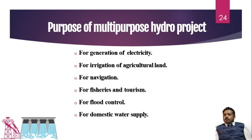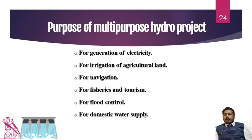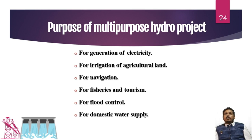Let's see what those purposes are. Generation of electricity is the basic need, but irrigation of agricultural land is another. As I explained in my last video, India has three different seasons and bulk water availability is only in the rainy season. If we want to keep agricultural growth increasing, we must provide water for agriculture in summer too. So we store water in a dam and use it for agricultural purposes.